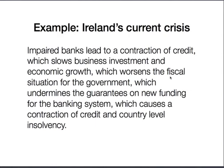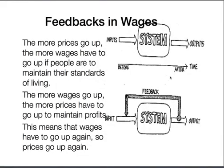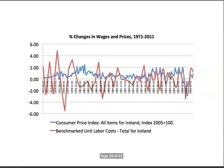One really nice example of feedbacks is the banks: after the collapse of Lehman Brothers, international banks got very scared, contracted the interbank market, and the credit crunch happened. That slowed business investment and economic growth, which hammered the fiscal situation, undermined guarantees and new funding, which caused a contraction of credit at country and sovereignty level. Nobel laureate Jan Tinbergen noted this circularity: profits fell because investment fell, and investment fell because profits fell — there's a feedback effect there. There are also feedbacks in wages: the more prices go up, the more wages have to go up, and the more wages go up, the more prices have to rise to maintain profits.